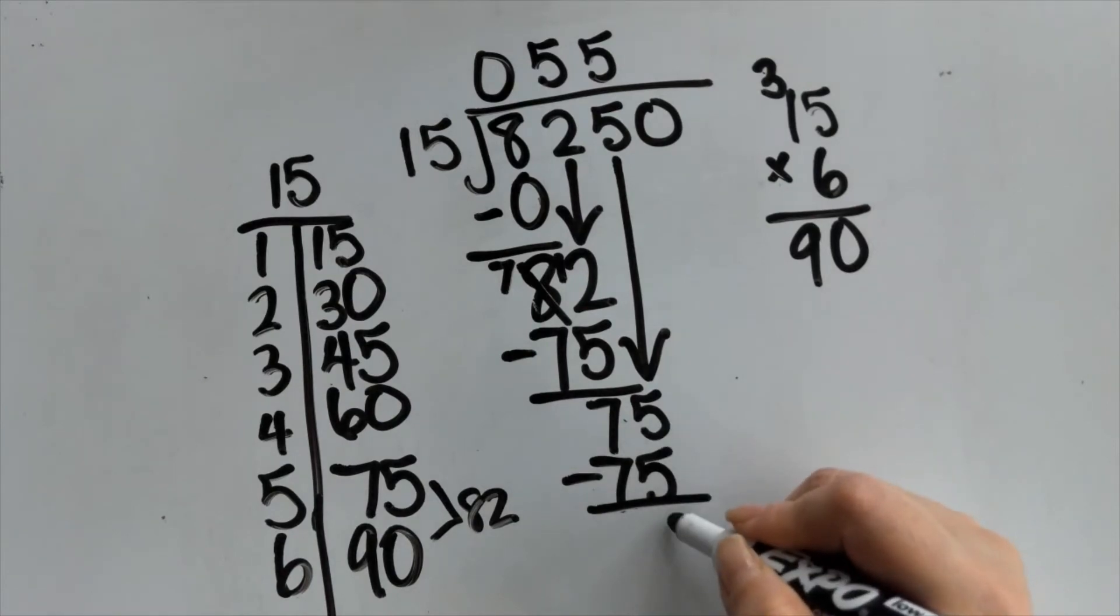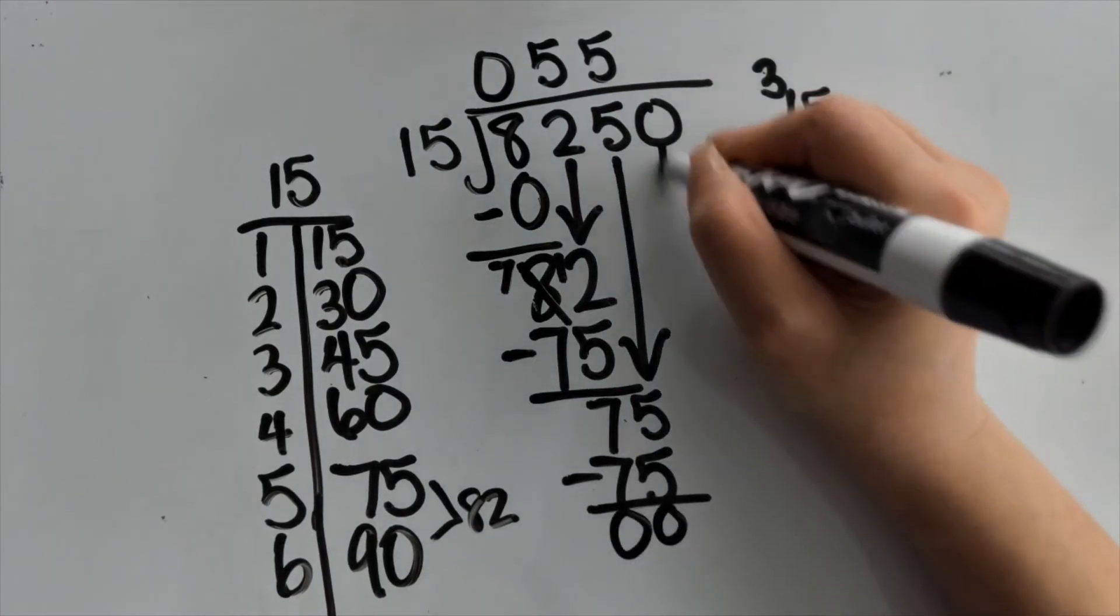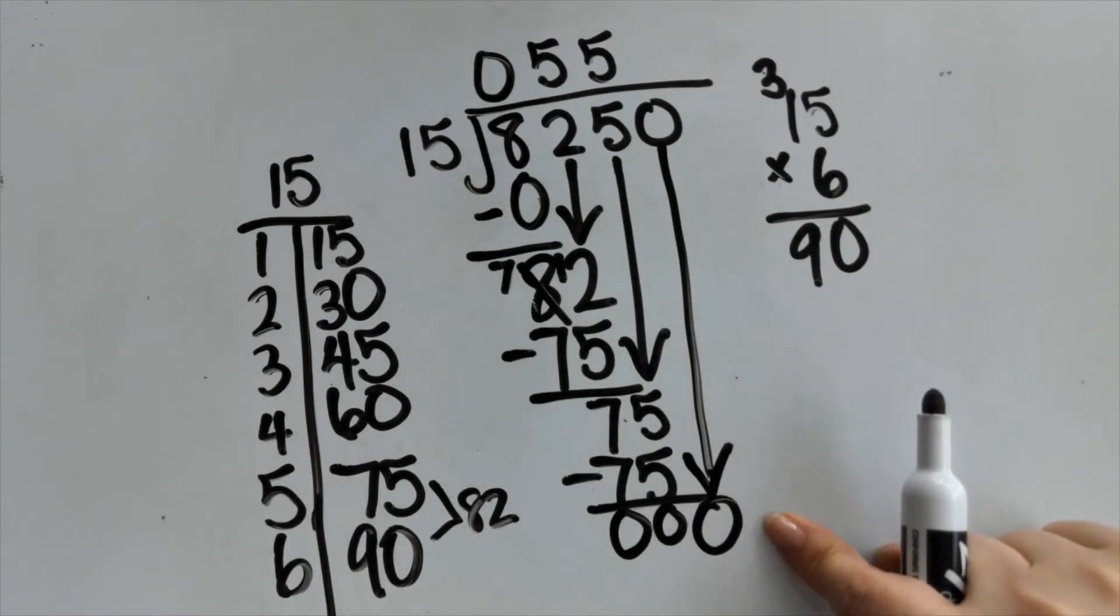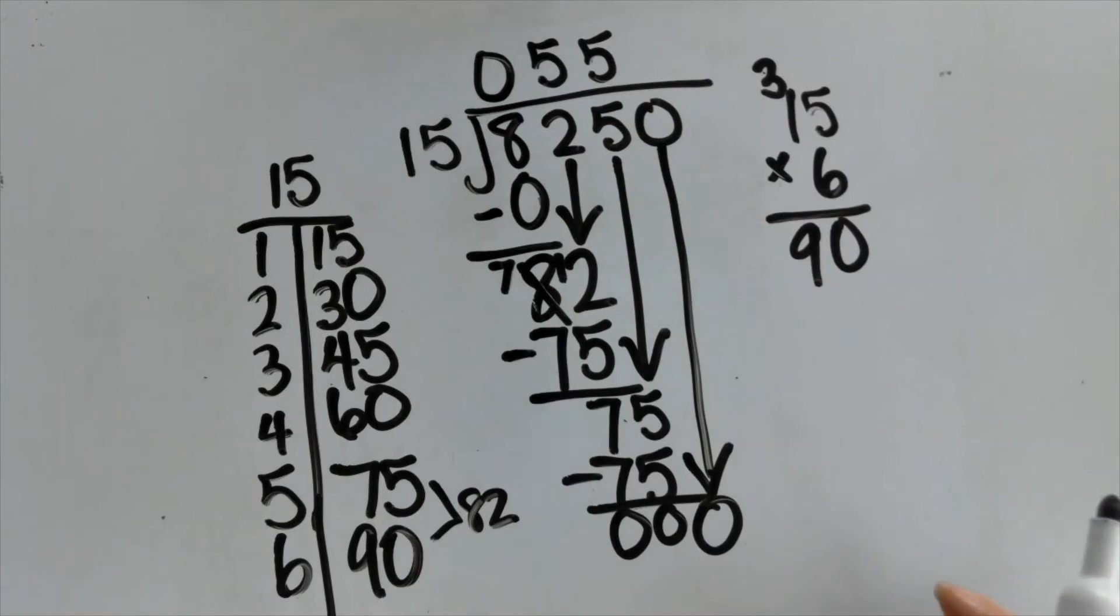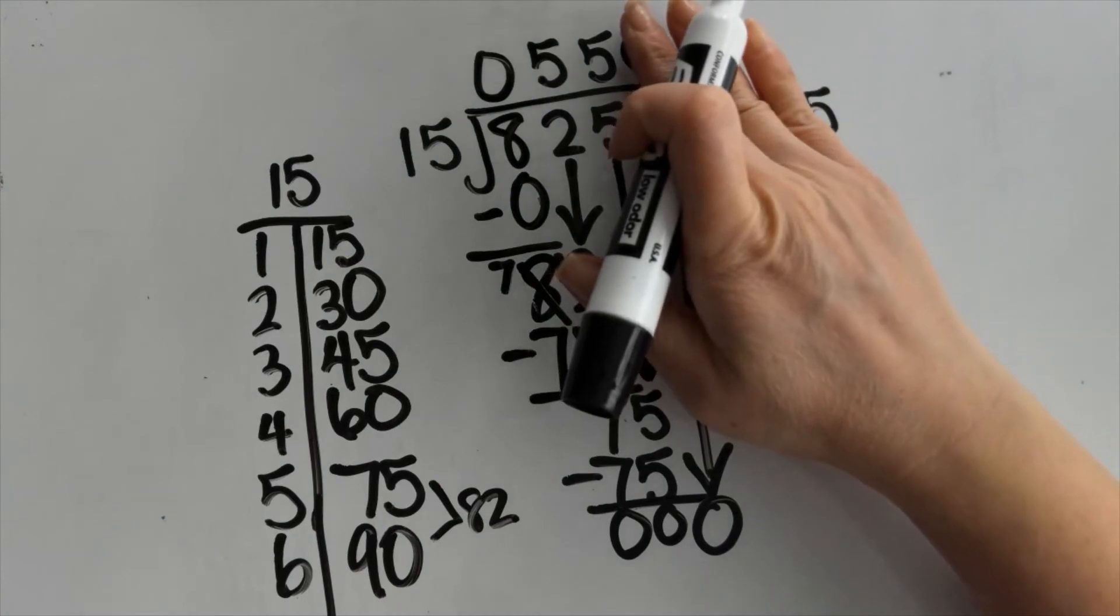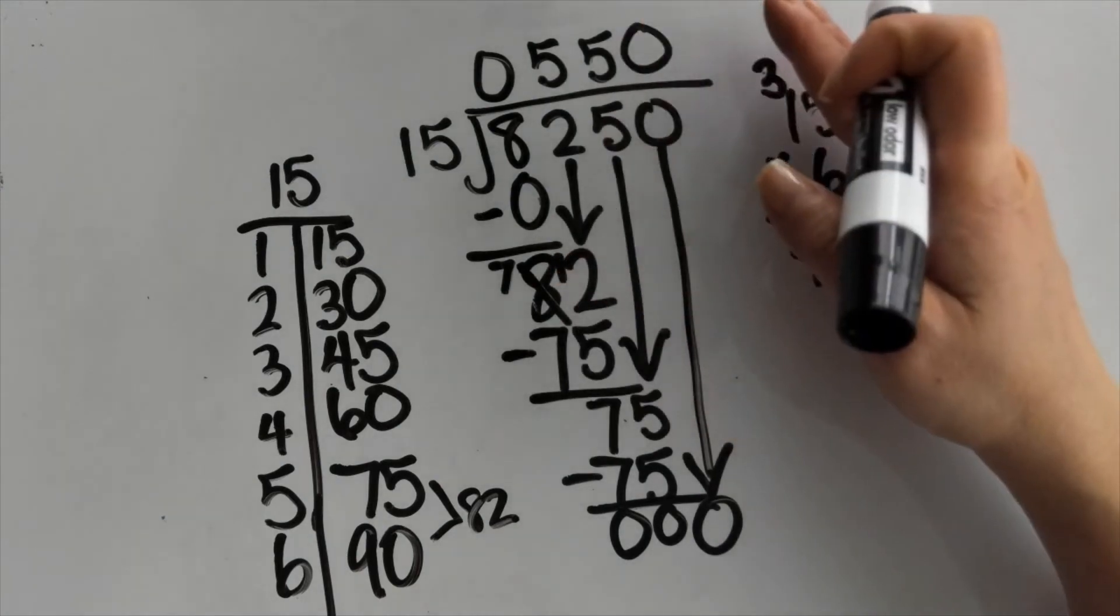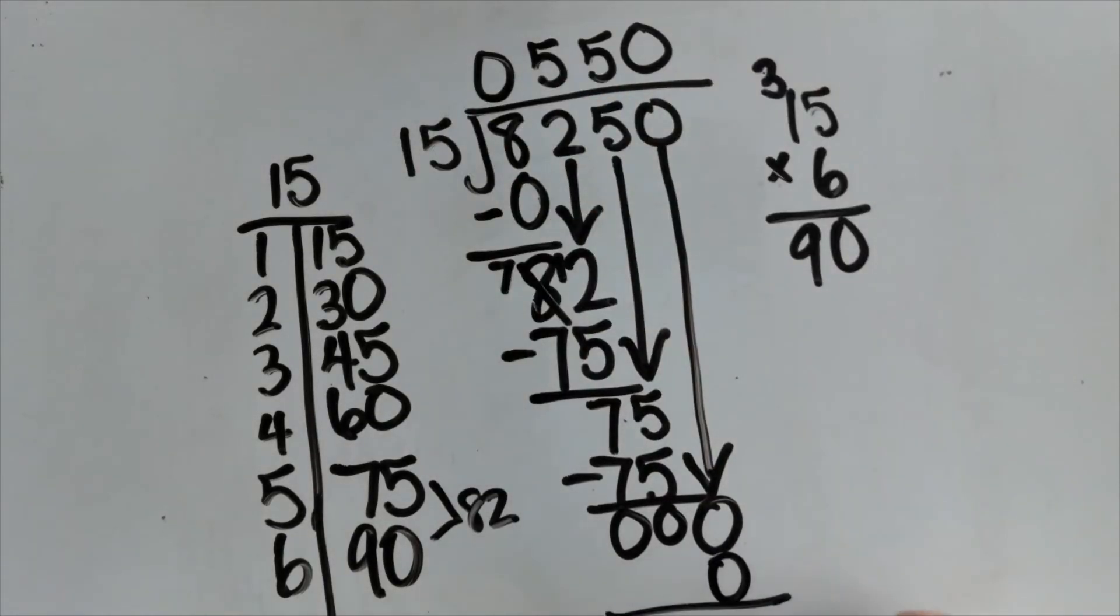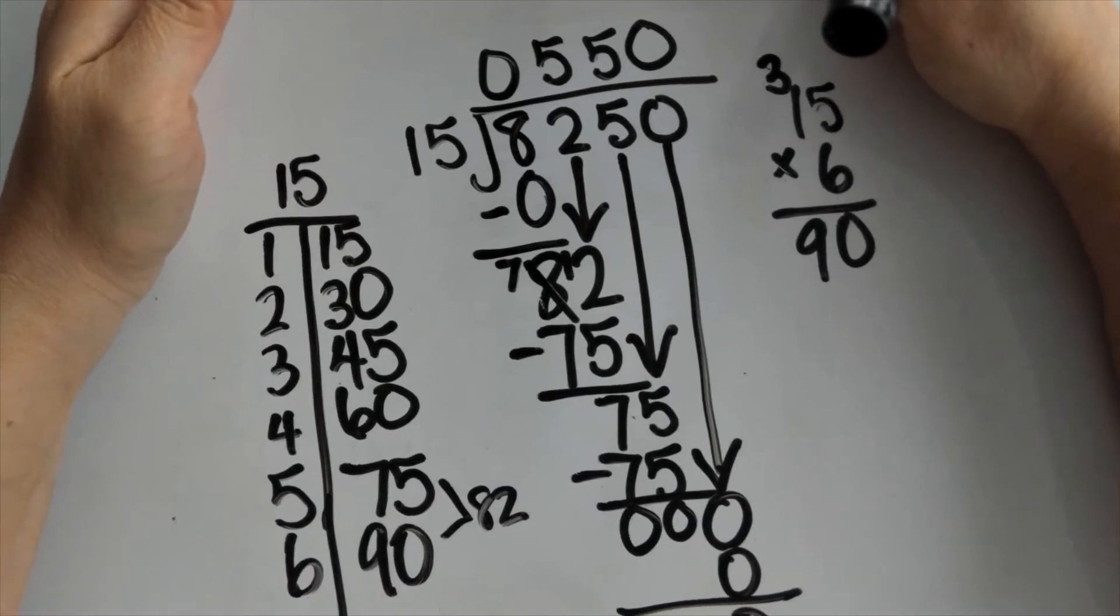5 minus 5 is 0, 7 minus 7 is 0. Now I still have a 0 to bring down. The minute you bring down, you have to divide again. Look, even if it's a 0, you can still divide. So 0 divided by 15 is actually just 0, but you must put that 0 in because without this 0, then your answer is only 55, but this is 550. So 0 times 15 is 0. When I subtracted it, I zeroed it out.